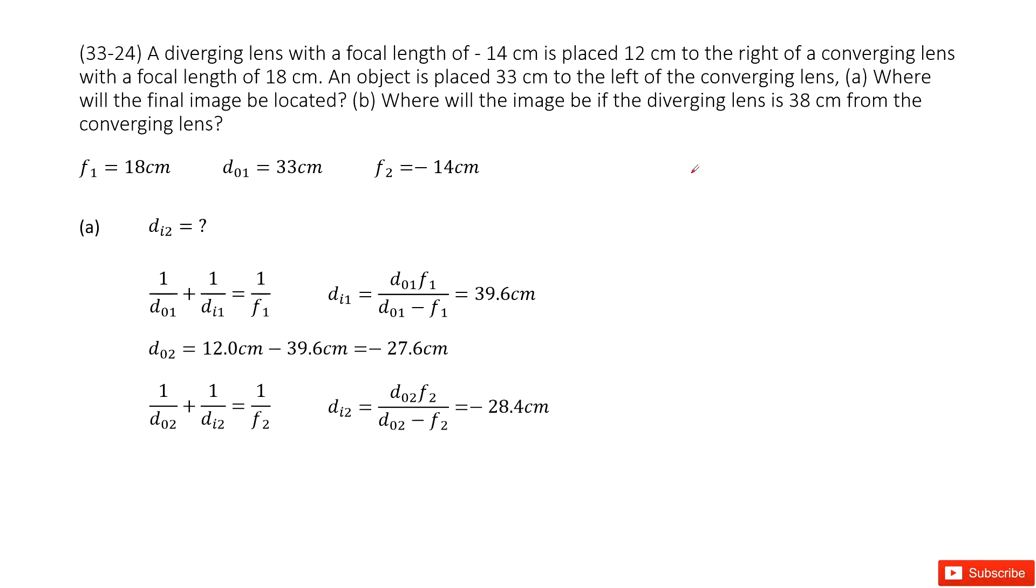We have a system with two lenses, f1 and f2. The object distance for the first lens, d01, is 33 cm, and the distance between these two lenses is 12 cm.